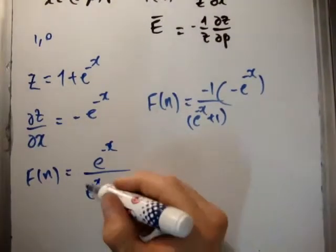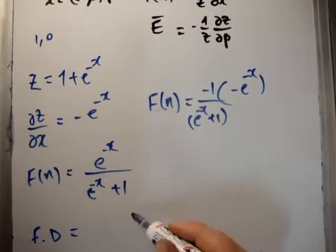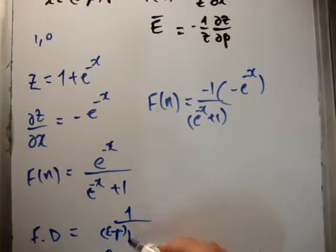And that's it. If we plug in the values, the Fermi-Dirac distribution becomes 1 over e to the epsilon minus mu times beta plus 1.